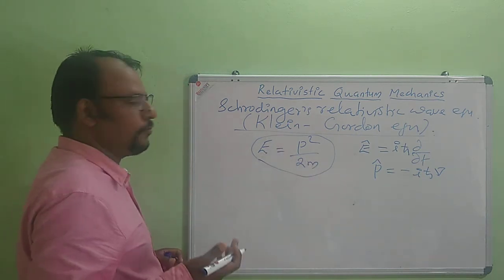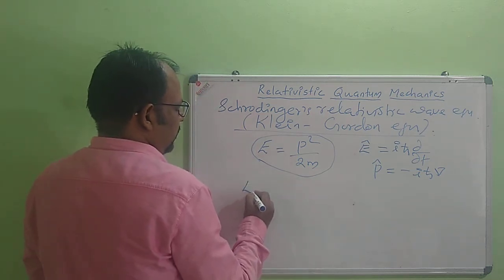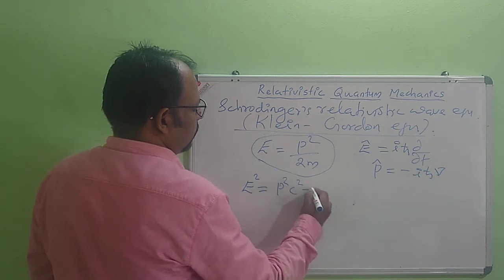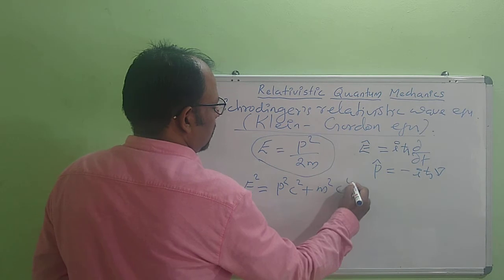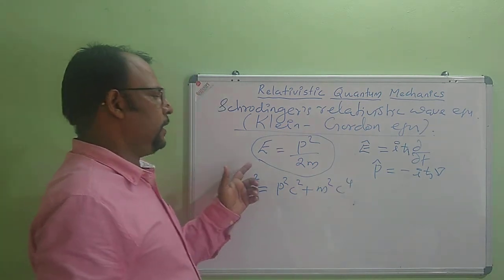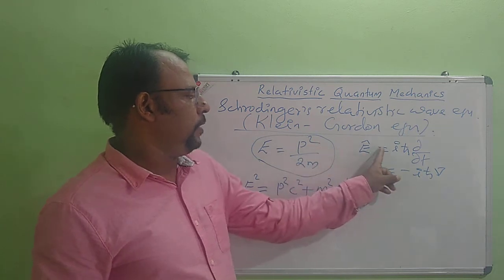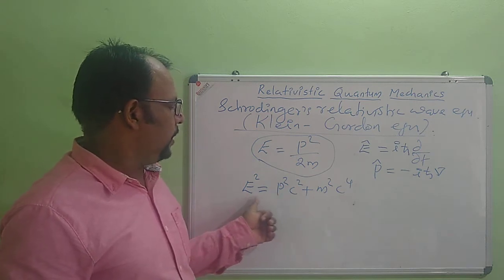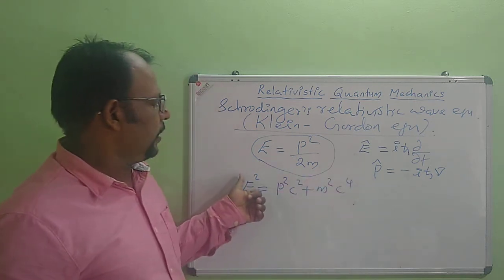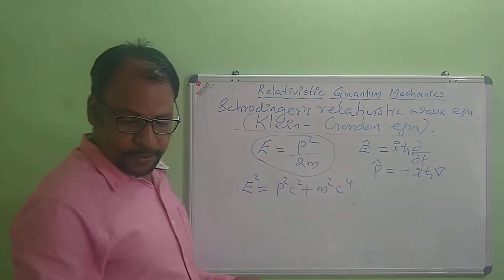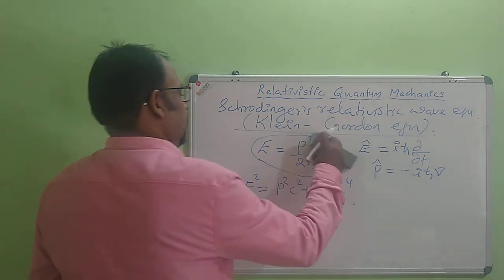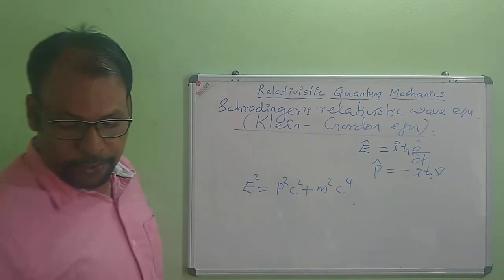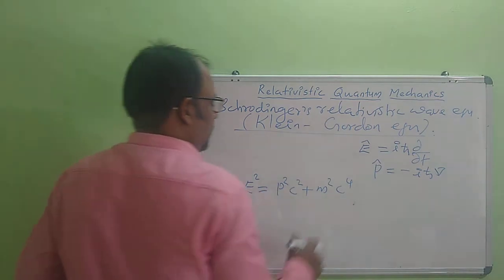We have the relativistic equation for energy as E² = p²c² + m²c⁴. In the non-relativistic case, we replace E and p by the corresponding operators. For the relativistic case, we can replace E and p in the relativistic energy equation by their corresponding operators. When we replace E and p by the corresponding operators, we will get the Schrödinger wave equation in the relativistic case.